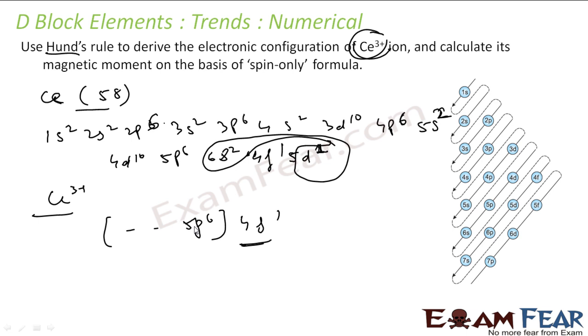Now we talk about the magnetic moment of cerium. Please note we have to find the magnetic moment of cerium, not cerium 2 plus. We have unpaired electrons: f has one, d has one, total is 2. So μ is √[n(n+2)], n is 2, that is √8, which is 2.828 Bohr magneton.